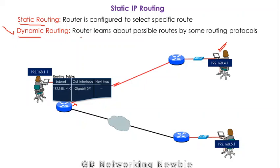There is also another way called dynamic routing. In dynamic routing, we have invented protocols called routing protocols — rules and regulations — that the router follows to automatically find possible paths to different destinations. By following these routing protocols, the router learns different routes to different destinations, and that learning is saved in the routing table.